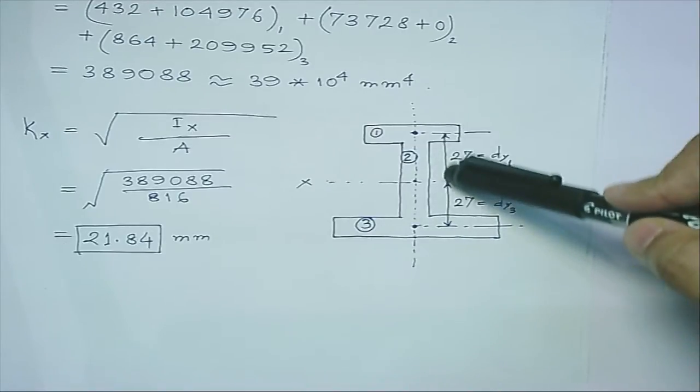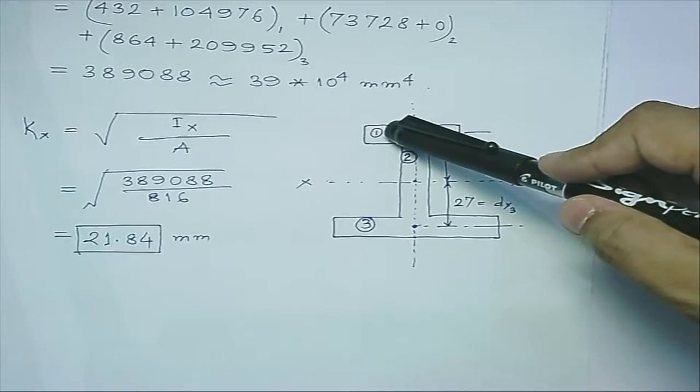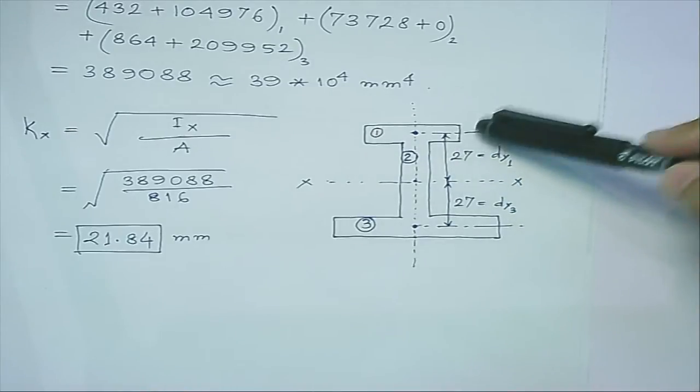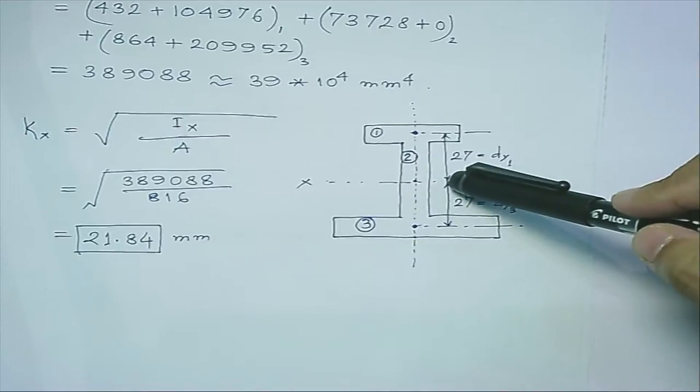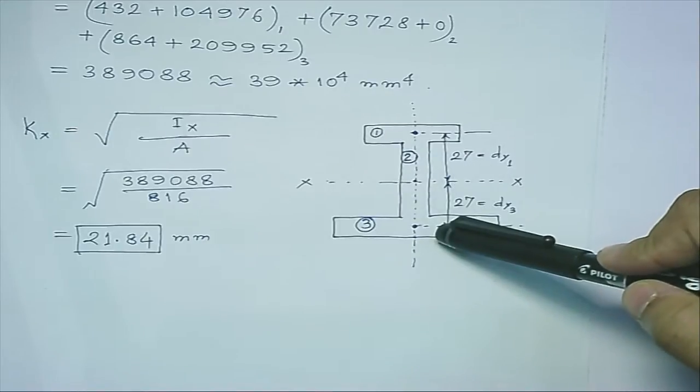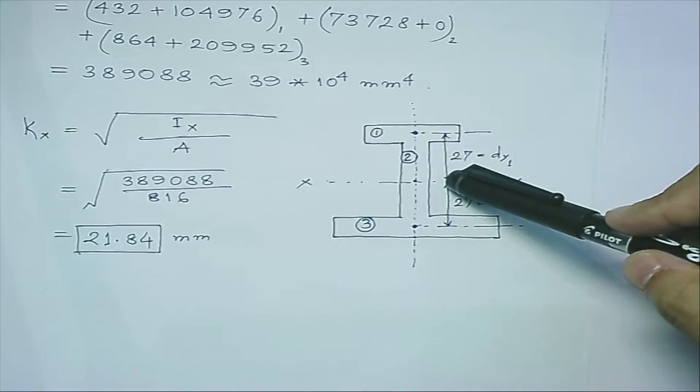What we need to know is this distance—the distance of the first area's centroid, its centroidal axis to the x-axis. Similarly, for the bottom flange, what is this distance from the centroidal axis to the x-axis.